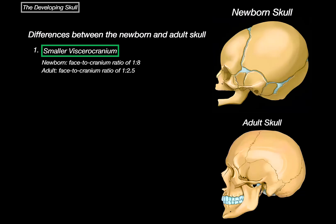First out of three main differences. The second difference is the proportion of the skull to the entire body. In newborns, the head makes up almost one fourth of the total body length — that's why babies appear to have a much larger head. But in adults, the head is about one seventh of the body's length.